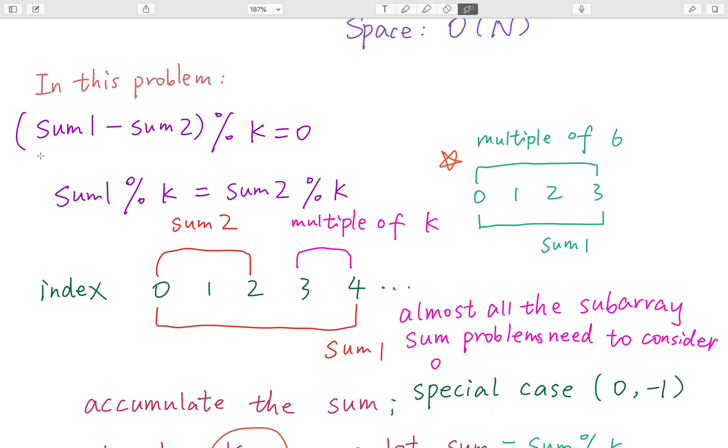In this question, we have sum1 and sum2, both starting from index zero. If their subtraction modulo k equals zero, that means the subarray is a multiple of k. So sum1 modulo k equals sum2 modulo k.